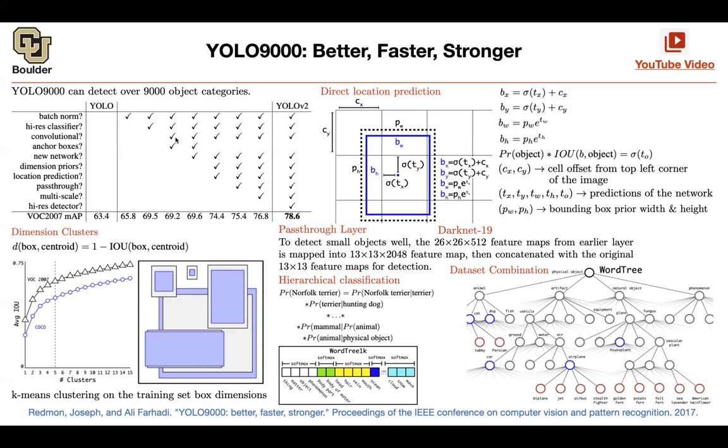This is the biggest improvement. Other smaller improvements include batch normalization, higher resolution classifiers, and higher resolution detection systems.